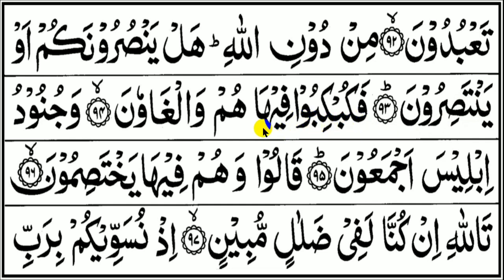Fakubbuu fikibu fihaahum wal ghawun. Fakubbuu: ada qalqalah sughra, memantul kecil. Mawtobi'i dua ketukan. Mawtobi'i kasroh bertemu ya; ini fathah bertemu alif, juga mawtobi'i. Hum: idhar safawi. Wal: alif lam komariyah. Gha: mawtobi'i fathah bertemu alif. Wun: ini dhommah terbalik pengganti dari waw asalnya, maka menjadi bacaan mad arid lisukun panjangnya enam ketukan. Walghaawun. Berikutnya.